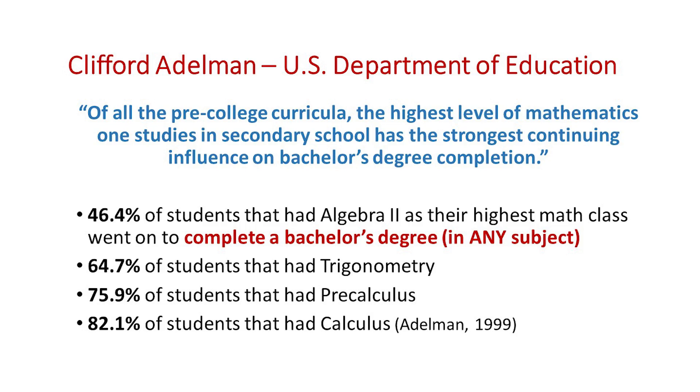Clifford Adelman from the U.S. Department of Education did a study in 1999 where he looked at high school students' subjects and how each correlated with college success — whether they finished college with any degree. He found that mathematics was the highest indicator. Nearly 46% of students who completed Algebra 2 as their highest level of math graduated with an undergraduate degree, 65% of those who took trigonometry did, and 82% of students who took calculus graduated with a bachelor's degree.